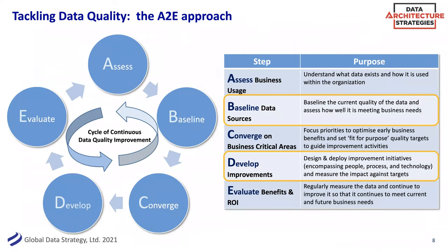This is an approach that we often use in different phases — we call it the A2E, from assessing to eventually getting and evaluating the ROI. We're really going to talk about business rules as a lens. To frame data quality: first, assess the business usage. Why are we doing this and where should we zoom in and focus? We're big fans of quick wins.